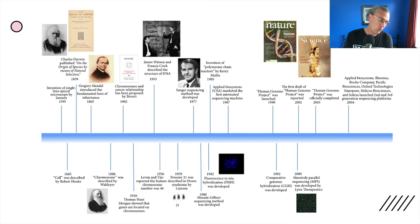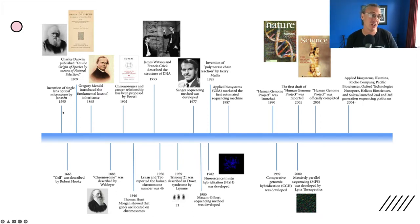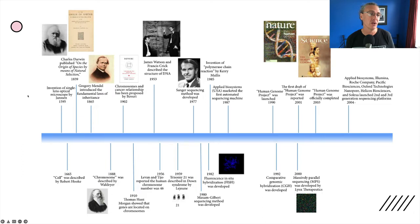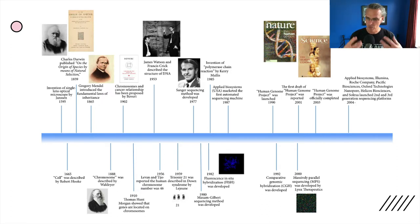In order to understand that, you really need to understand some history. What I've got here is a specific history — the history of our knowledge of DNA and genes. It starts with the invention of the optical microscope. The instruments are really important in every science. Having the optical microscope in 1595 was important because by 1665 we were actually able to see that our bodies are made up of much smaller matter called cells.